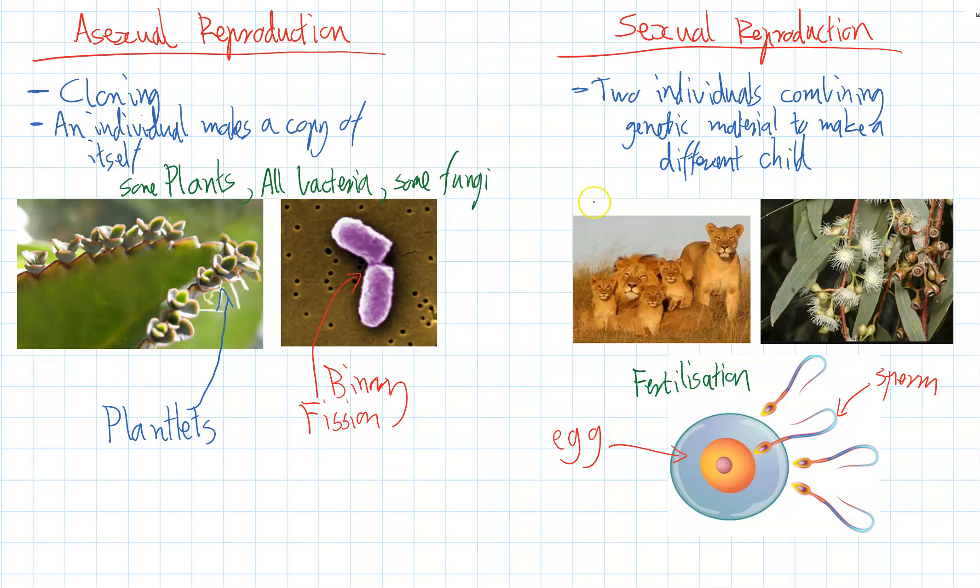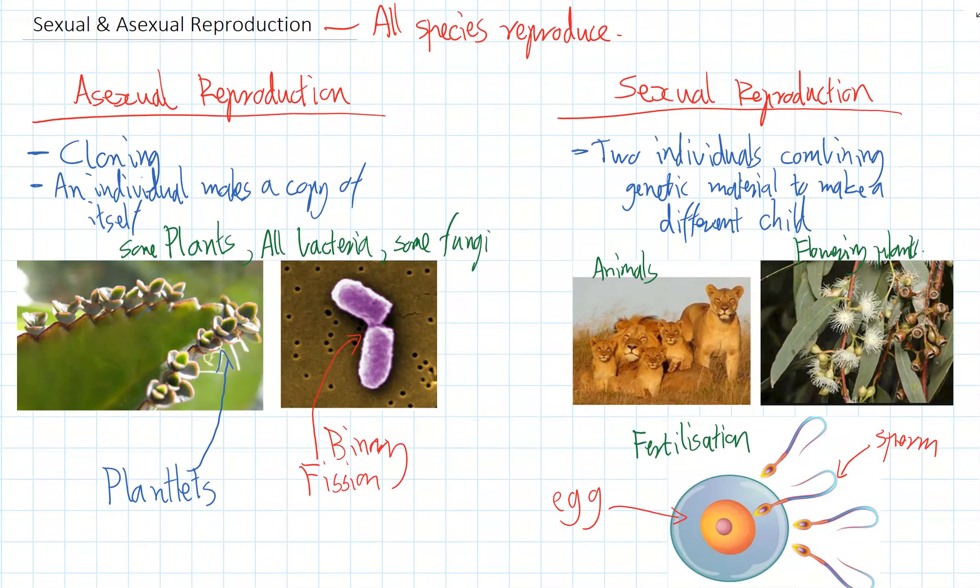So pretty much all animals do it, and pretty much all plants use sexual reproduction as well, particularly flowering plants. Alright, so that's the two different ways that species can actually reproduce.